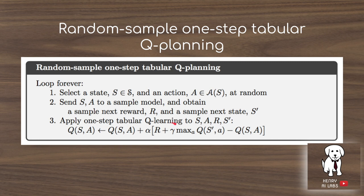The update is identical to standard Q-learning: we apply the update using the reward at the next time step plus the discount factor times the value of the next state s′ we end up in (off-policy, taking the max), then subtract our original estimate of the value of the starting state-action pair.